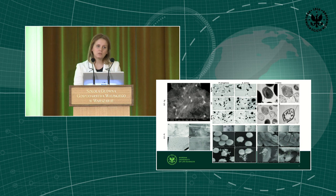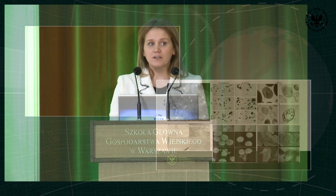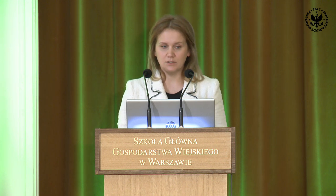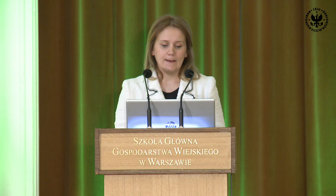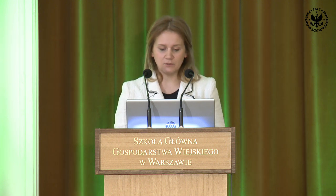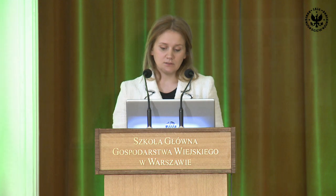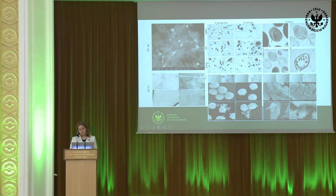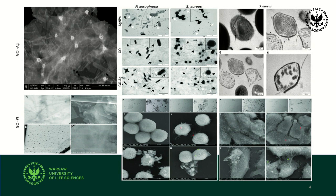The next step was to functionalize the graphene oxide with different types of anti-cancer agents. The first idea was functionalization with cisplatin, a well-known anti-cancer drug used in different types of cancer treatment. However, the results were not sufficiently efficient in terms of cell viability, so we decided to switch cisplatin for platinum nanoparticles, which also have good biological properties in terms of anti-cancer activity. Here I present the morphology of the cells.